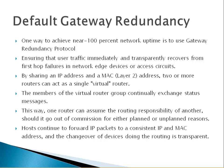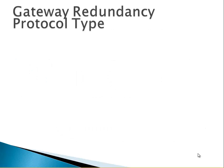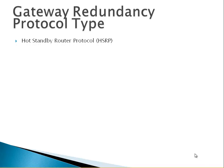We can have two or more routers on the LAN. The members of the virtual router group continually exchange status messages, so one router can assume the routing responsibility of another should it go out of commission for either planned or unplanned reasons. Hosts continue to forward IP packets to a consistent IP and MAC address, and the changeover of the device doing the routing is transparent.